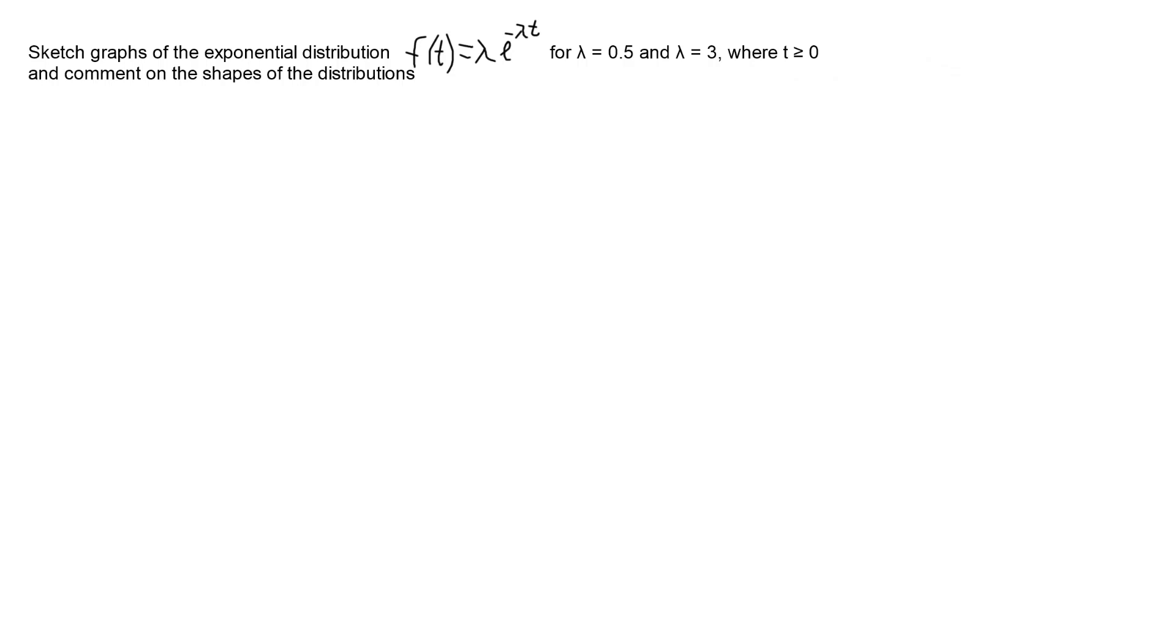Hi, in this video I'm looking at sketching the graphs of the exponential distribution function f(t) equals lambda e to the negative lambda t for two different choices of lambda, 0.5 and 3, where t is greater than 0. Then we're going to look at what they look like, compare them, and make a statement about the shapes.